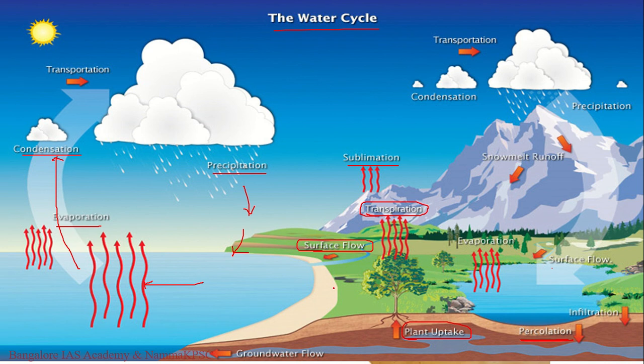If water is not taken up by plants, it may further percolate down into the subsoil and bedrock, forming groundwater. Groundwater slowly flows through pores and fissures and eventually reaches lakes or comes out as springs, once again forming part of surface water and continuing the cycle.